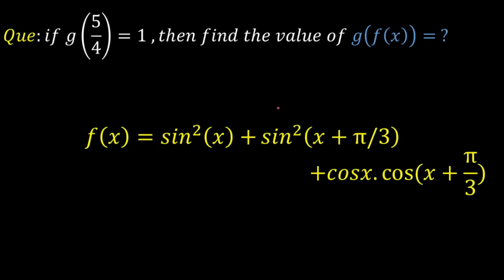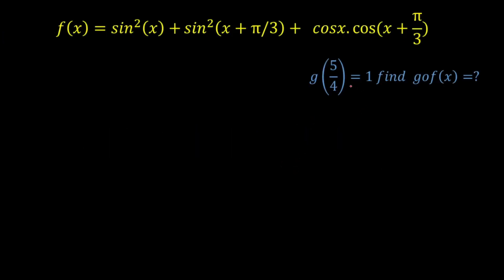Hello everyone. Today we're going to look at a problem from functions — this question was asked in previous IIT screening papers. The problem: g is a function for which the initial condition g(5/4) = 1 is given. We have to calculate the composite function g(f(x)), where f(x) is given as sin²(x) + sin²(x + π/3) + cos(x)·cos(x + π/3). Only f(x) is given; g(x) itself is not given, but the value g(5/4) = 1 is provided.